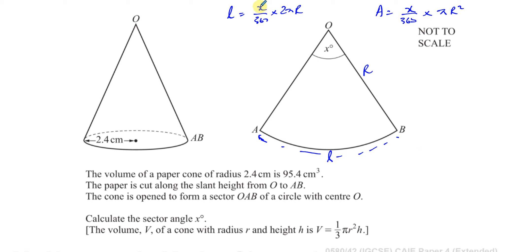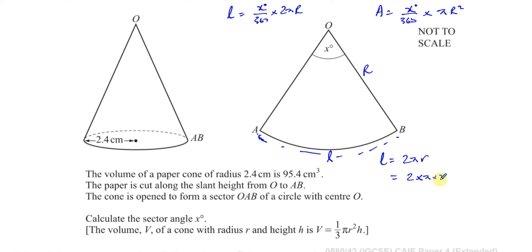I can find the arc length of this sector quite easily, because it equals the circumference of the base of the cone — points A and B join together when opened up. So the arc length equals 2 × π × 2.4, which gives 4.8π. So the length of this arc is 4.8π.